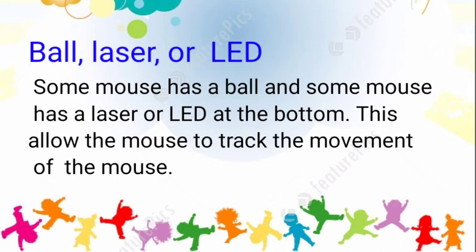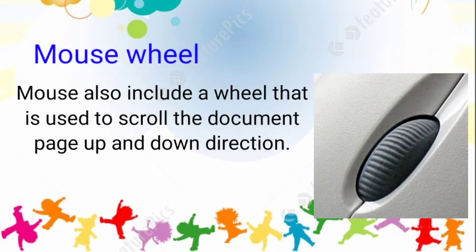The third part is the mouse wheel or scroll wheel. The mouse also includes a wheel that is used to scroll the document or page in the up and down direction. When we see a big page, we use the mouse scroll wheel.